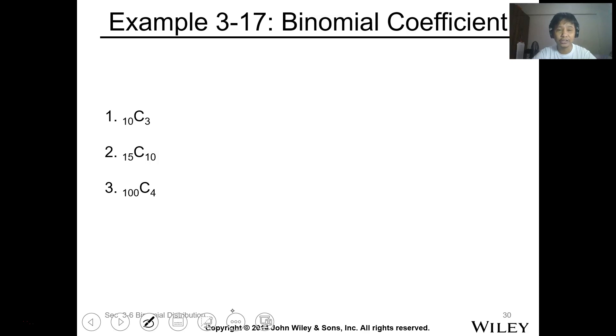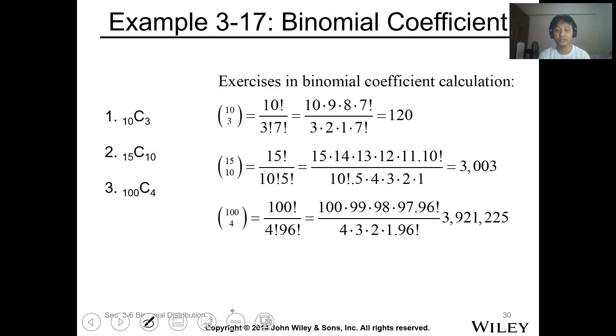Take note of the combination. Use your calculator. Combination of 10 taken 3, that's 120. Do we have the same answer? 120. Second, combination of 15 taken 10, that's 3,003. Do we have the same answer? The last one, 100, combination of 100 taken 4. The answer is 3,921,225. Do we have the same answer? 3,921,225. You have your calculator, so this is not difficult.